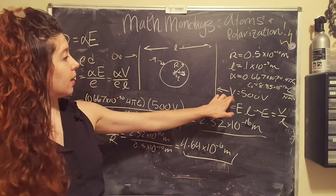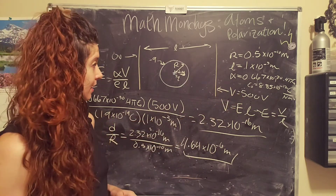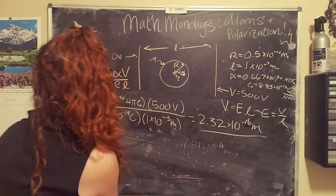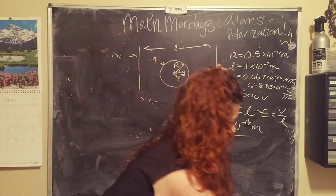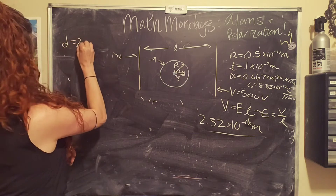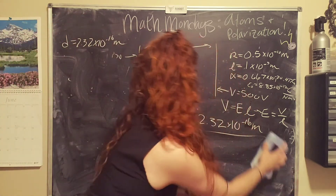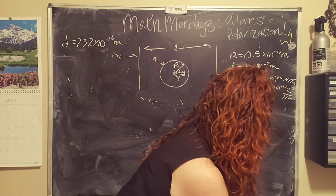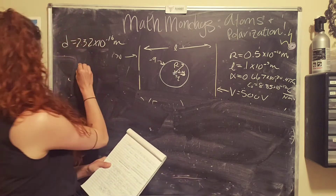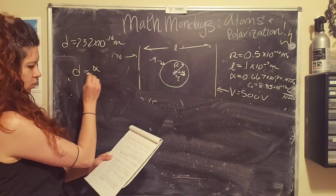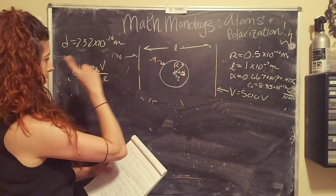How much energy would we need to ionize the atom? That is going to be our next goal. We're going to write up here d equals 2.32 times 10 to the negative 16th meters. Now we need to calculate the voltage, and we're going to use the same equation: d equals alpha times the voltage divided by the charge of the electron times the separation distance.